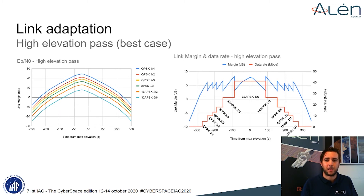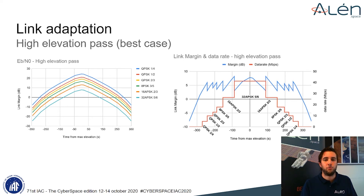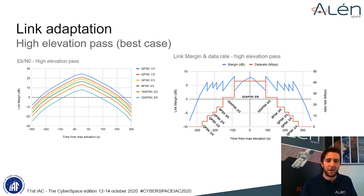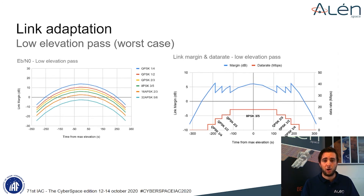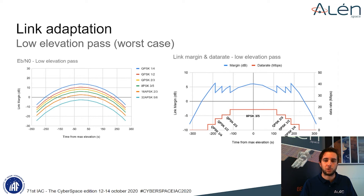We consider that a link can be established when the link margin is higher than 3 dB. On the right, we see the results of applying the link adaptation mechanism to maximize performance during the complete pass. A wrong selection of modulation and coding scheme could lead to loss of many passes, which could have been used with another scheme with higher margin but less efficiency. On the contrary, many good passes could be underused if the selection is a low-efficiency modcode. Please note that the low elevation pass has a maximum elevation of only 17 degrees, and yet we can still achieve remarkable data rates with a smart selection of modcodes.